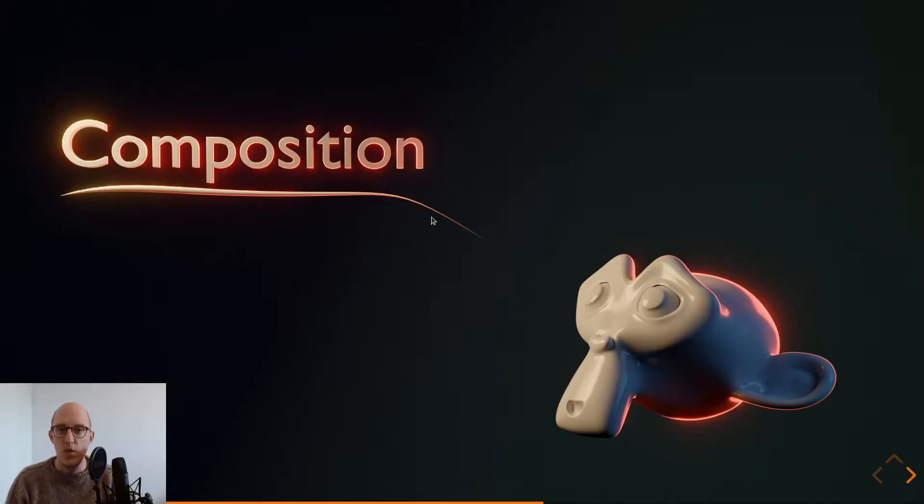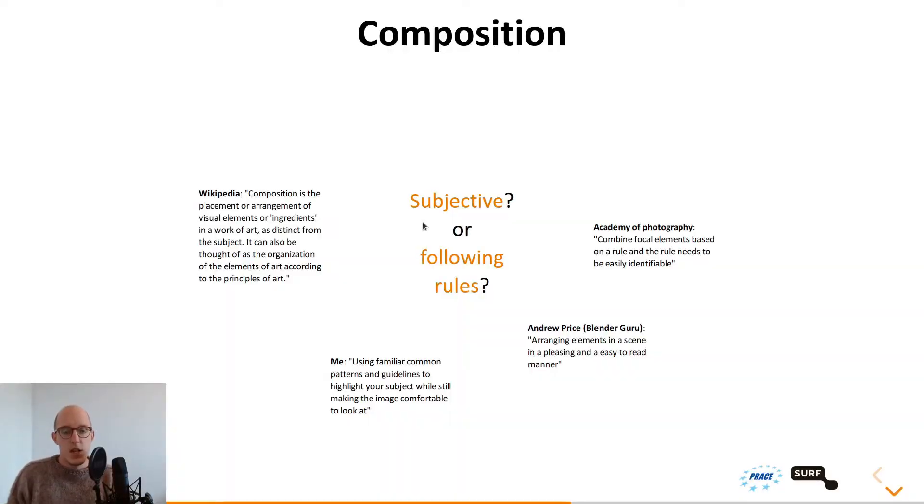But before we try to make such an image, we need to understand why, which is not always black and white. As you can see here, composition: there are multiple sources that have different opinions on what composition exactly is. Wikipedia says composition is placement and arrangement of visual elements or ingredients in your work of art as distinct from the subject. It can also be thought of as an organization of the elements of art according to principles of art. Or the Academy of Photography: combining focal elements based on a rule, and the rule needs to be easily identifiable.